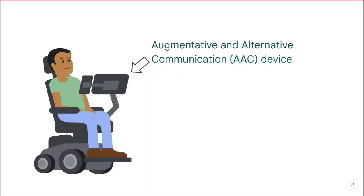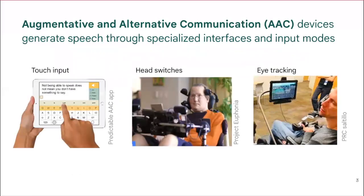Augmentative and Alternative Communication devices are used for communication when verbal speech is not available. People with a wide variety of disabilities and abilities may use AAC devices. AAC devices generate speech through specialized interfaces and a variety of input methods, such as touch screens, head switches, or eye trackers.